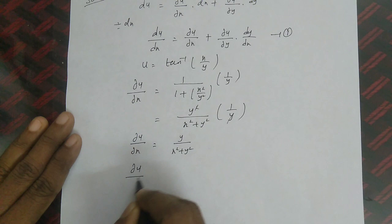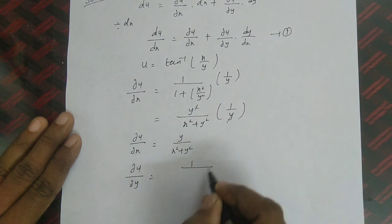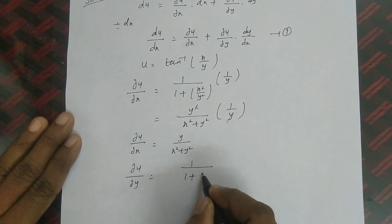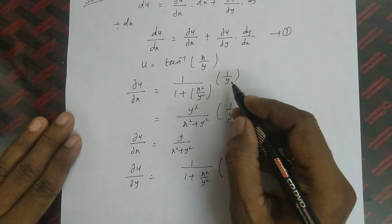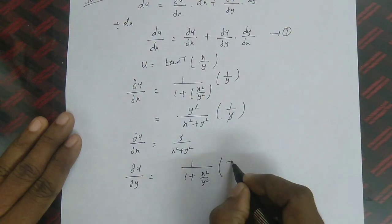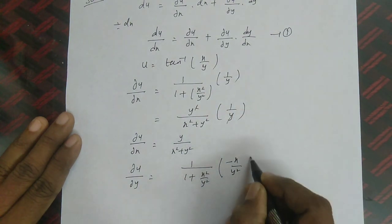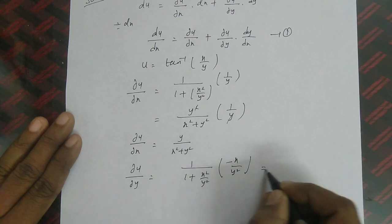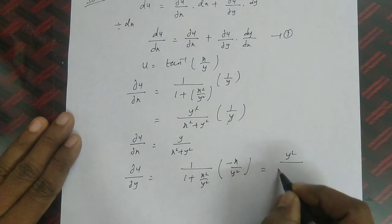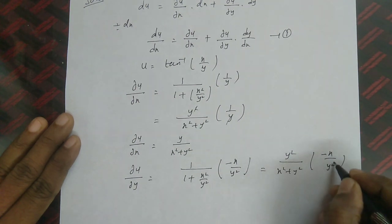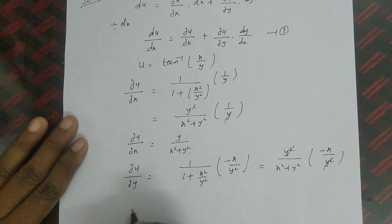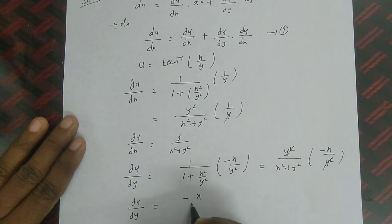Likewise, ∂u/∂y: derivative of tan⁻¹(x/y) with respect to y gives 1/(1 + x²/y²), and differentiation of x/y with respect to y is -x/y². Taking LCM: (y²/(x² + y²)) · (-x/y²). Cancelling y², ∂u/∂y = -x / (x² + y²).